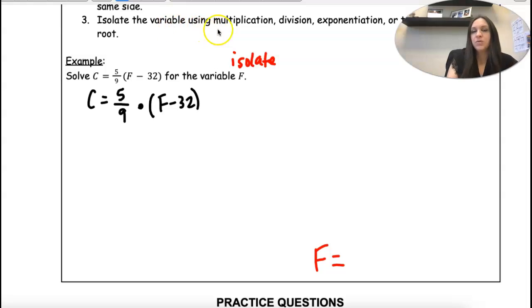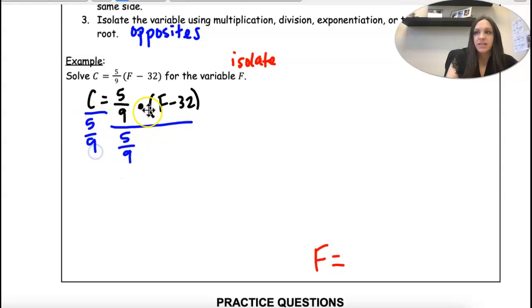So we're using the opposites. So if we're multiplying, to get rid of this, we're going to divide by 5 ninths on both sides. So these become 1, they cancel out, and then we're just left with F minus 32.